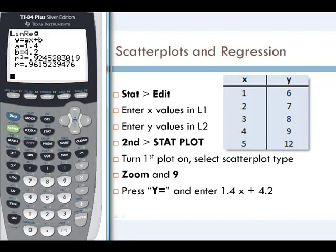We'll go to Y= and enter that equation: 1.4x + 4.2. Then we'll graph. Now we see both our scatter plot points and our linear regression equation, and we can see how well the equation fits the data.